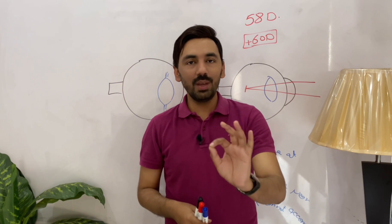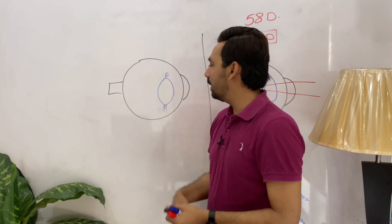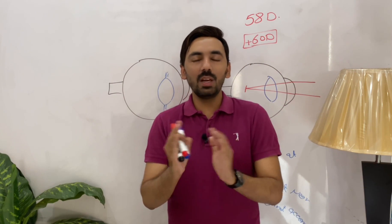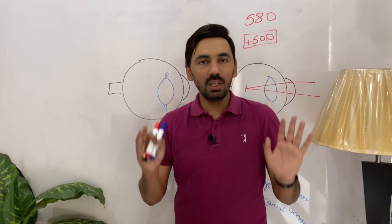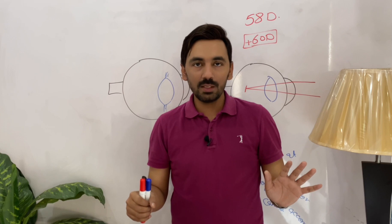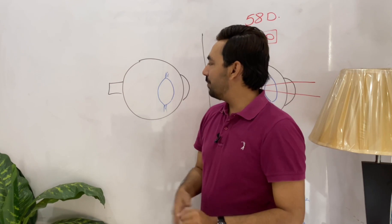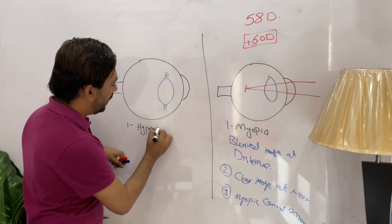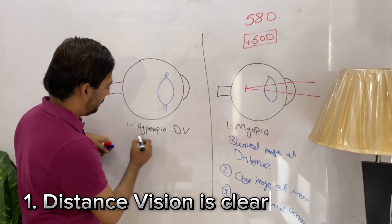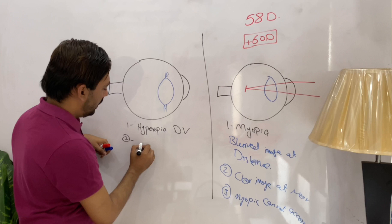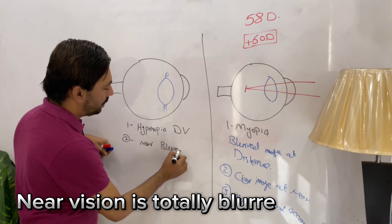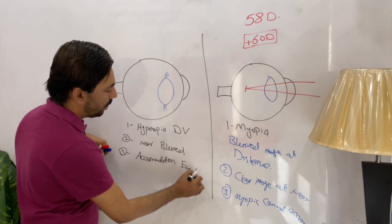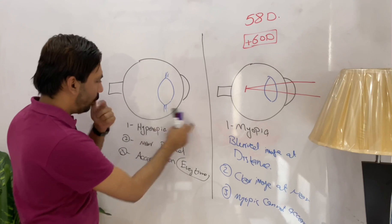Statement three is now also clear: because there is a deficiency of plus power in the hyperopic eye, whenever the patient looks at distance, he or she must exert accommodation every time — except when sleeping. So to summarize hypermetropia: number one, distance vision is somehow clear; number two, near vision is totally blurred; number three, accommodation is exerted every time.